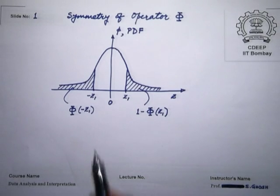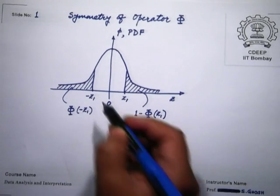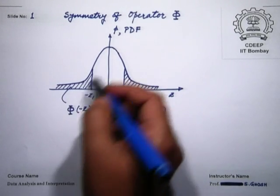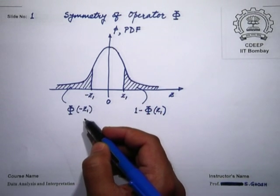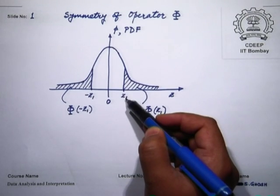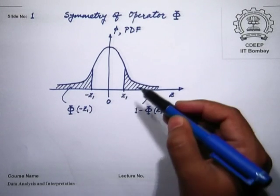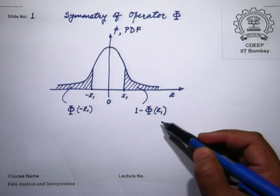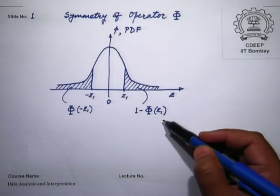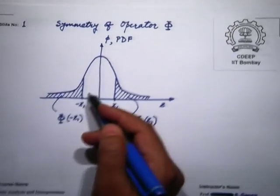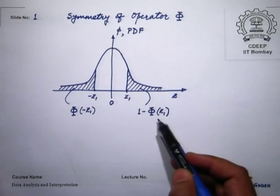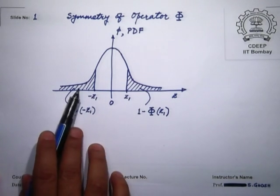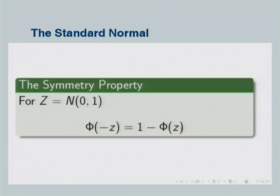The CDF at minus z1 is the area beneath the PDF up to minus z1. Symmetrically opposite, we have plus z1, equidistant from 0. The area to the right of z1 is 1 minus phi of z1. By symmetry, the area to the left of minus z1 equals the area to the right of z1, so phi of minus z equals 1 minus phi of z — a very important property of the standard normal distribution.